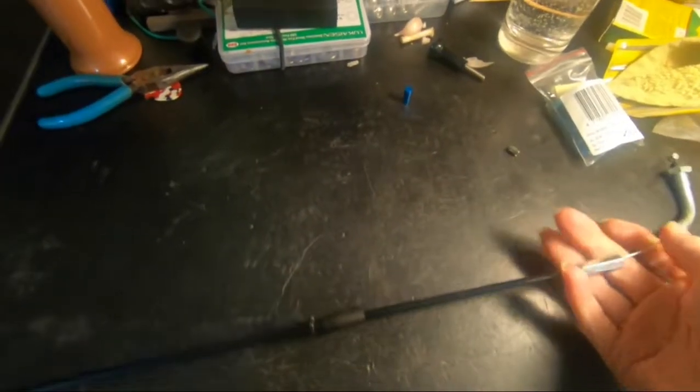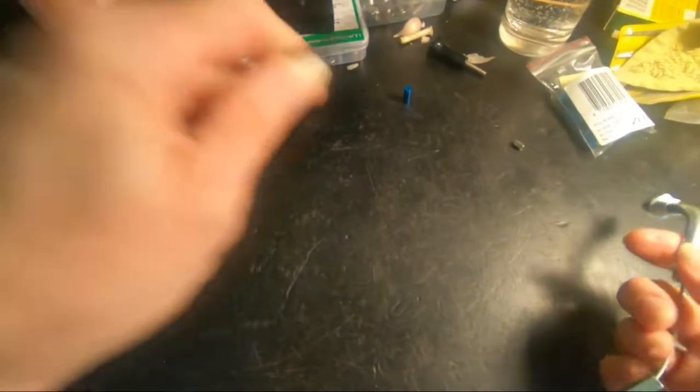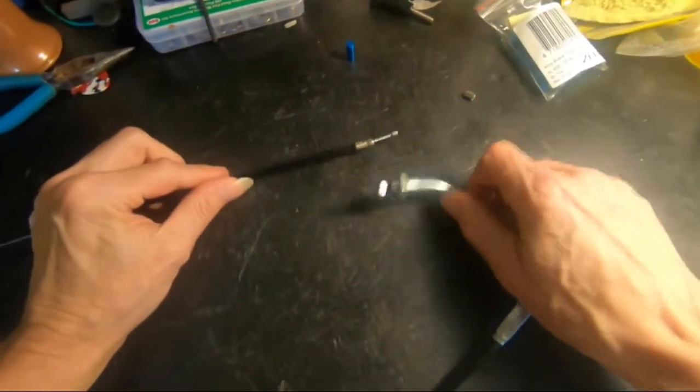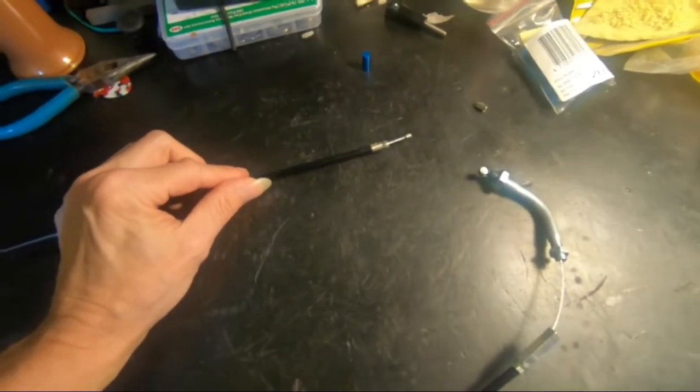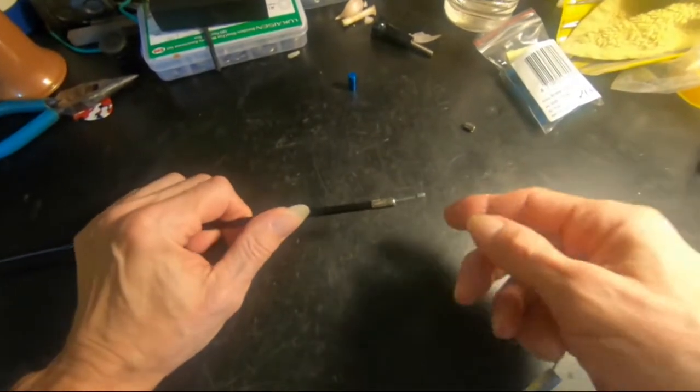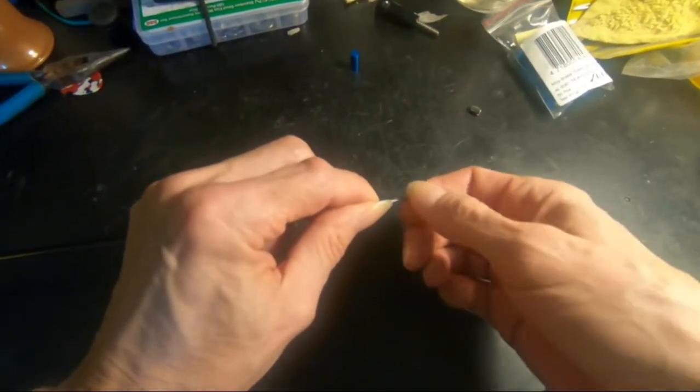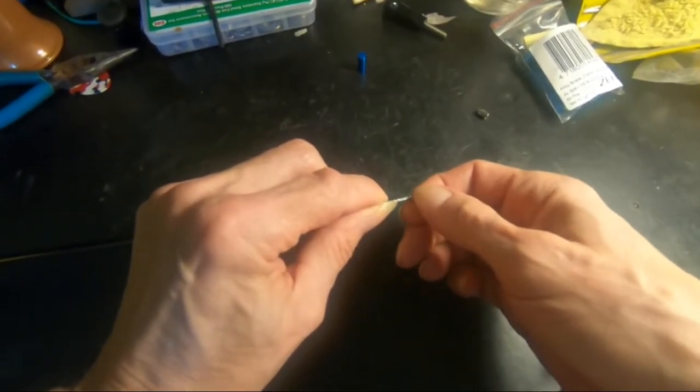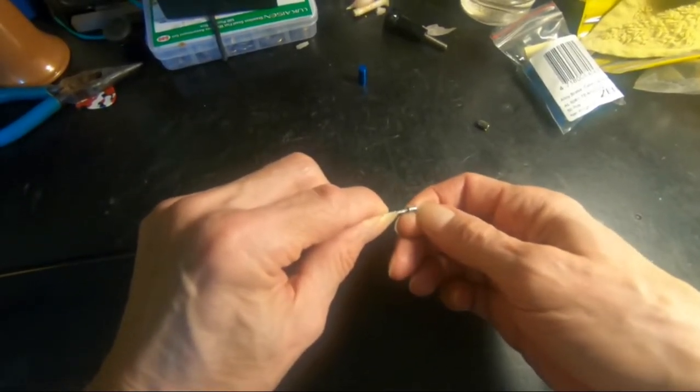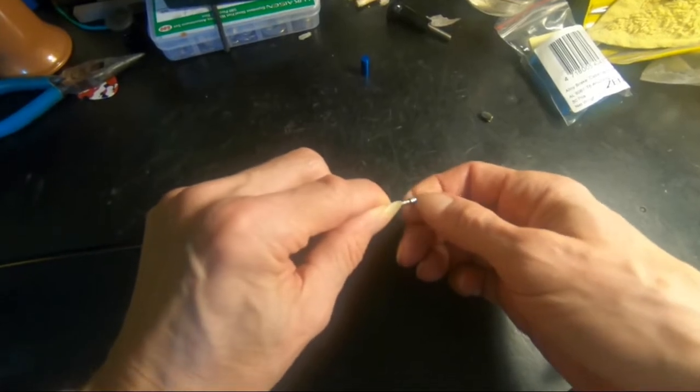Alright, so my throttle cable is way too long and I'm gonna shorten it. I thought that rather than messing with this little tiny end here and having to put some solder on the end and then shape it and everything, I figured I would cut this end off instead. I bought these replacement pieces.